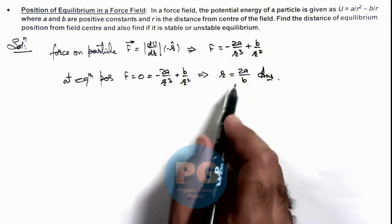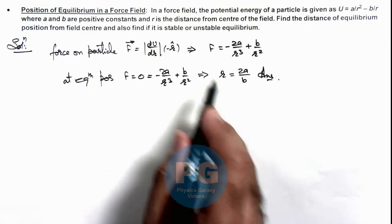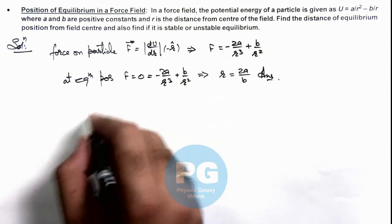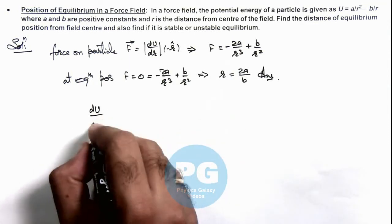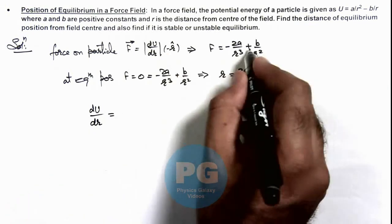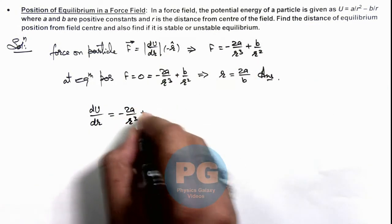To check whether this equilibrium is stable or unstable, we analyze with the help of energy. We can calculate dU/dr, the rate at which energy varies. We have dU/dr = -2a/r³ + b/r².